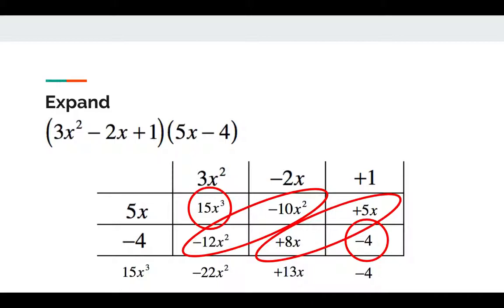So this will be the answer. The result would be 15x³ - 22x² + 13x - 4.